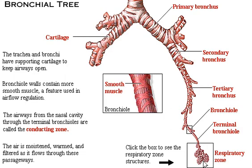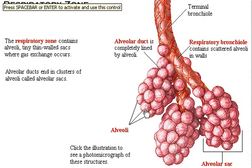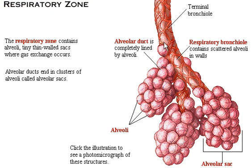We're going to look at the respiratory zone in a little bit more detail. The respiratory zone contains the respiratory bronchioles and the alveoli. Each respiratory bronchiole may also contain some alveoli in their walls. The alveoli with the bronchioles form what is known as the alveolar sac.